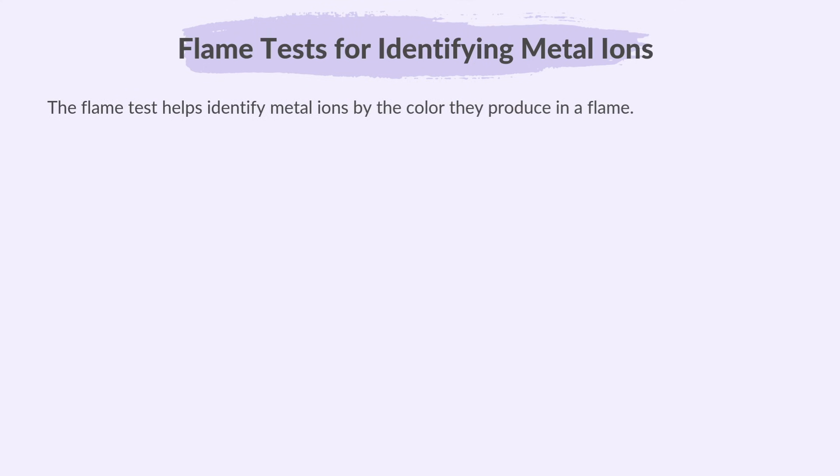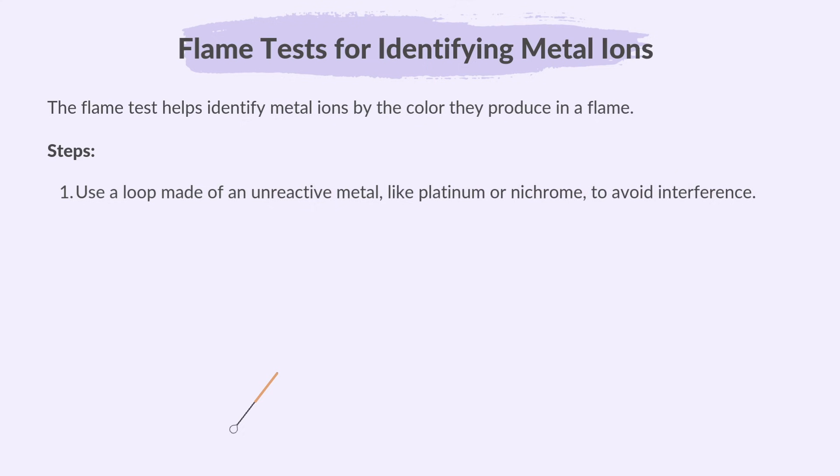Finally, let's take a look at flame tests for identifying metal ions. The flame test helps identify metal ions by the colour they produce in a flame. Use a loop made of an unreactive metal like platinum or nichrome to avoid interference.